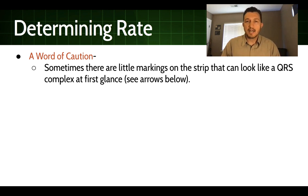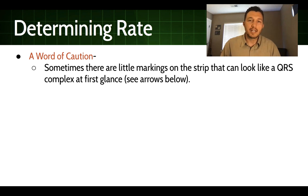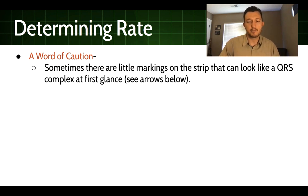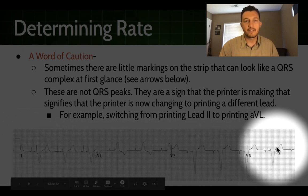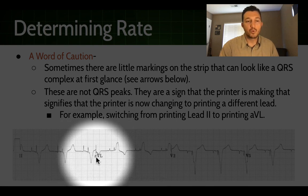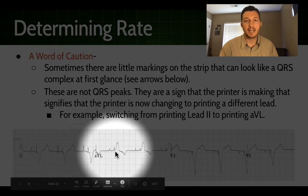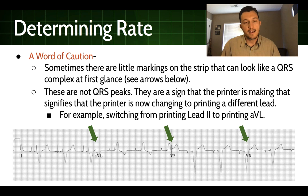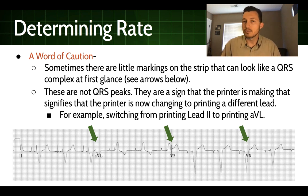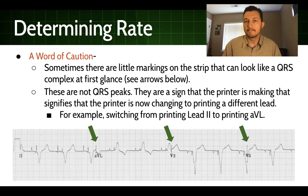Before we wrap up, a quick word of caution. Depending on the EKG machine, some older machines put little vertical stripes on the EKG between leads being printed. Don't make the mistake of mistaking those vertical lines as R waves. In this example, you can see the machine puts a tick—a vertical line—between lead 2 and AVL. Make sure what you're counting truly is an R wave and not just a line between two leads. Most newer EKG machines put a little gap instead of a vertical line, but keep this in mind.